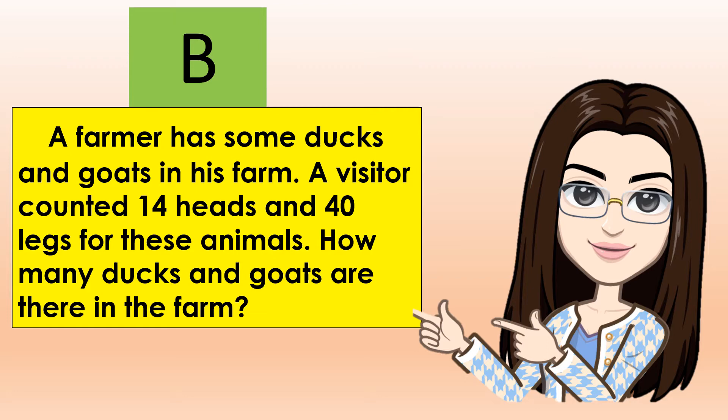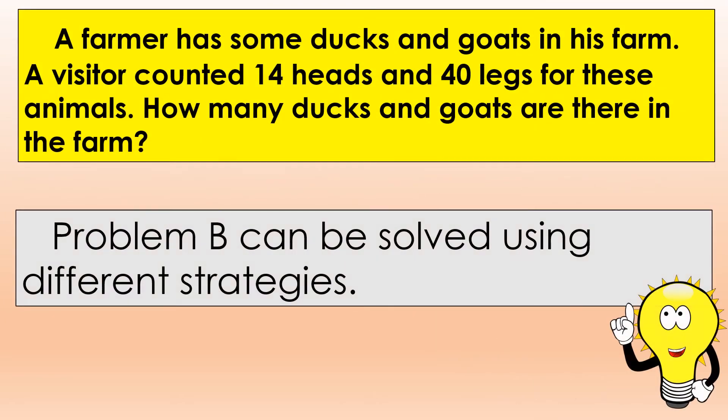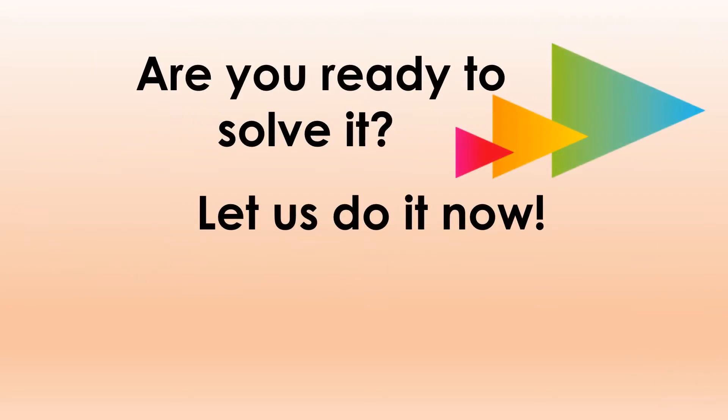The next problem that we are going to solve will be named Problem B. A farmer has some ducks and goats in his farm. A visitor counted 14 heads and 40 legs for these animals. How many ducks and goats are there in the farm? What is asked in the problem? Correct! The number of ducks and goats in the farm. Problem B can be solved using different strategies. It's very exciting! Are you ready to solve it? Let us do it now!